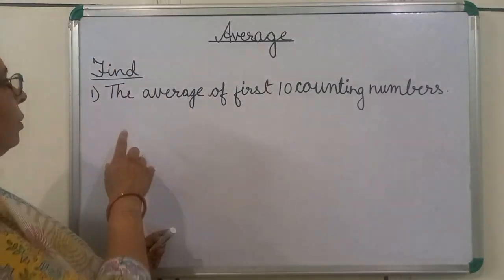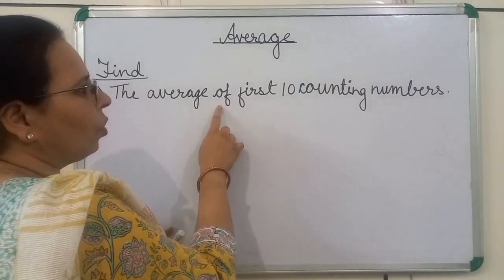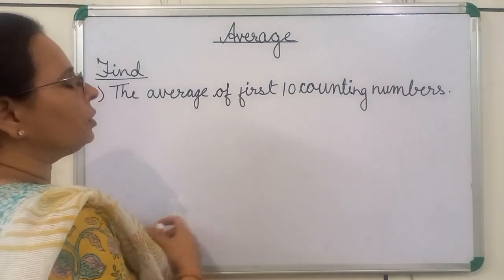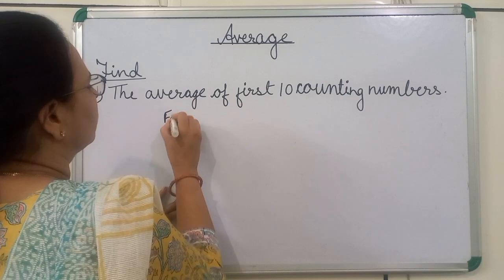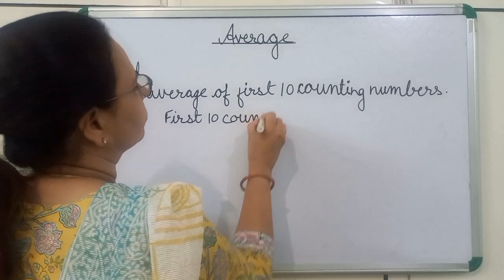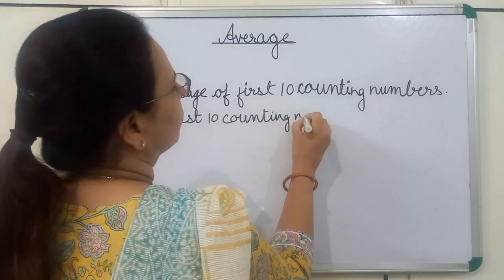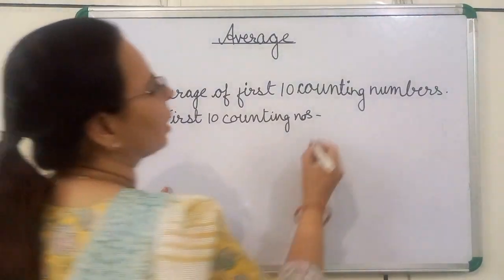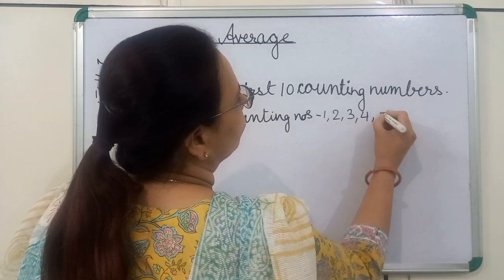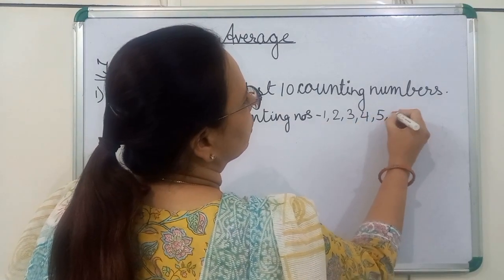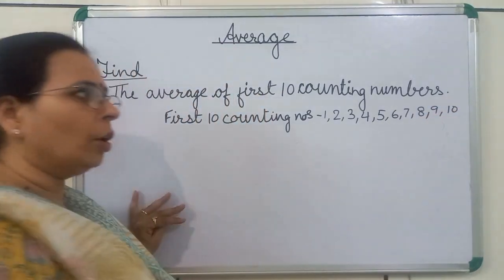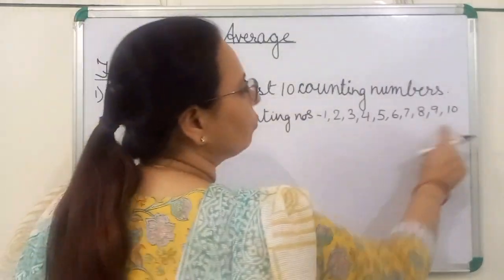Here, the question is given: find the average of first 10 counting numbers. First, we will write first 10 counting numbers. The first 10 counting numbers are 1, 2, 3, 4, 5, 6, 7, 8, 9, and 10. Here, we will find the average of these numbers.